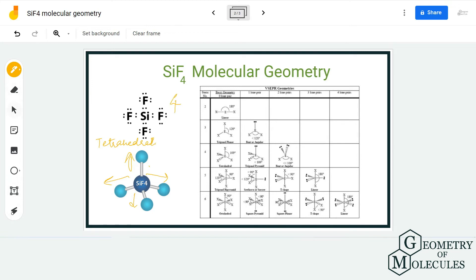To find out the steric number, we need to know the electron regions around the central atom. Here there are four electron regions as it is forming bonds with four fluorine atoms, and there are no lone pairs. Looking at this table, the molecules that have steric number of four and have zero lone pairs have tetrahedral molecular geometry.